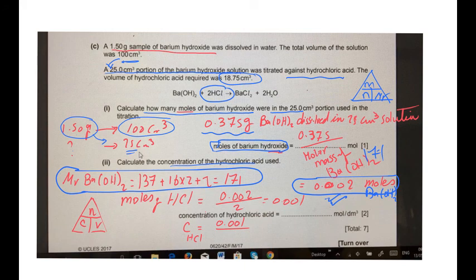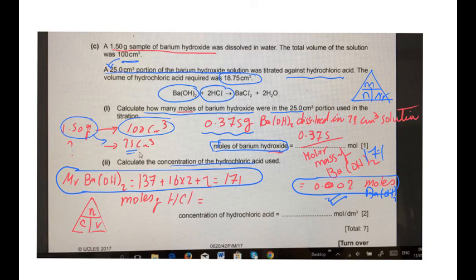Moles of HCl is double the moles of barium hydroxide because the mole ratio is 1 to 2. So, the moles of HCl will be 2 into 0.002 equals 0.004 moles of HCl. In order to calculate the concentration,